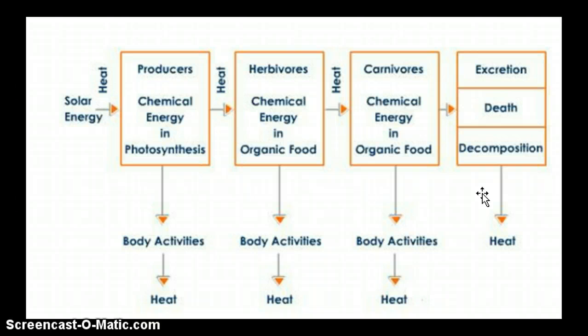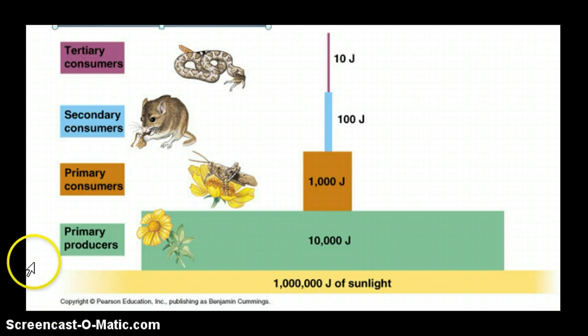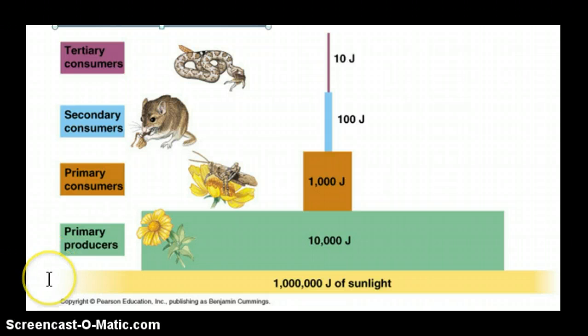That energy cycles in the biosphere again — it just isn't lost, it is recycled. So there's energy found at each of the levels in a food chain or a food web in the ecosystems that we're a part of. As energy passes from one organism to another, a lot of it is lost. The rule of thumb is that only about 10% of the energy from one level of the food chain is available to the next level.